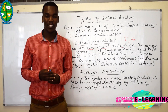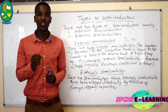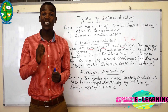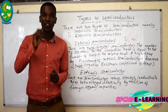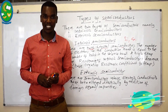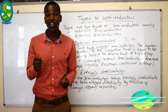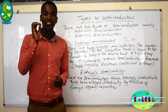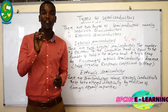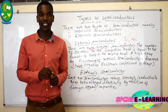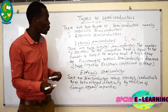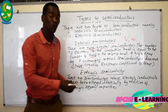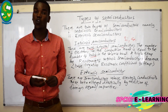In an intrinsic semiconductor, during conduction, an electron jumps from the valence band to the conduction band. On leaving the valence band, these electrons leave a vacant space, and this vacant space is what is known as a hole.